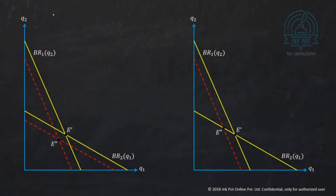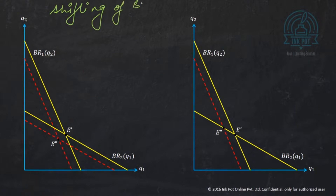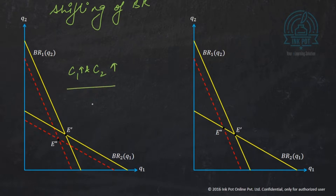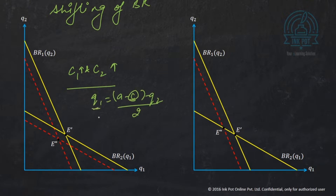Now let's discuss shifting of the best response curves. If both firms' marginal costs increase, then both BR curves will shift inward — I will produce less when my cost rises. For every Q2, my Q1 falls, so BR1 shifts inward, and similarly for BR2. If only C1 rises, then only BR1 will shift inward while BR2 remains constant.